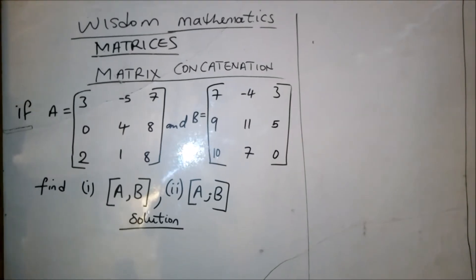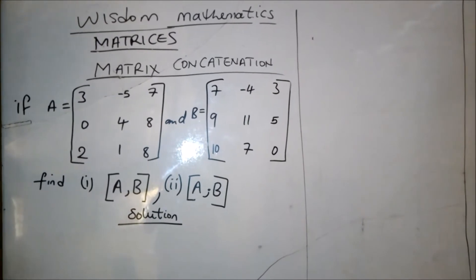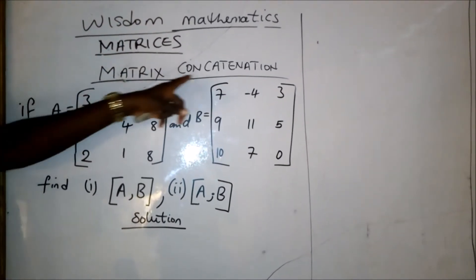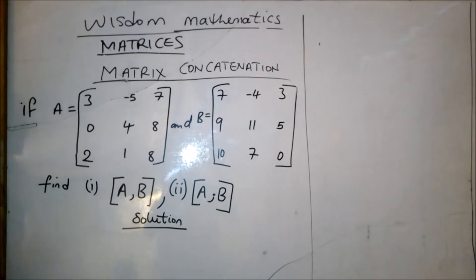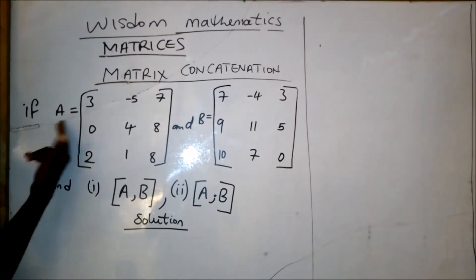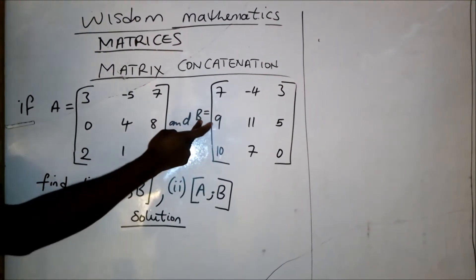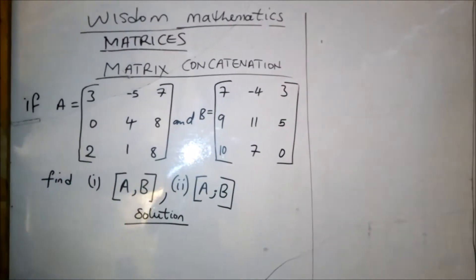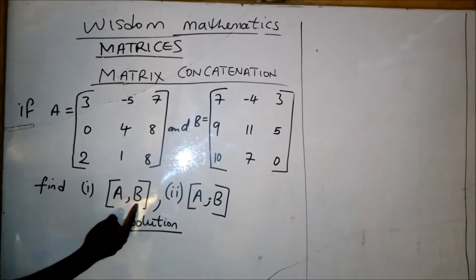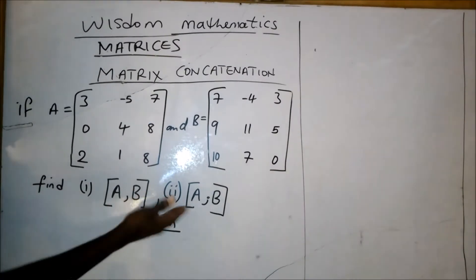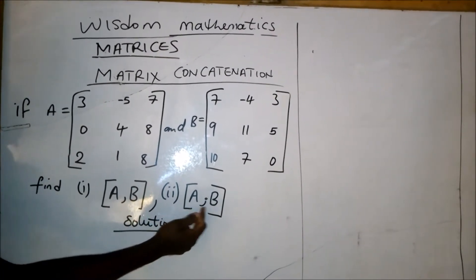Welcome to this episode of Wisdom Mathematics Tutorial on Matrices. We have matrix concatenation. The question we have here: if A is equal to this matrix and B is equal to this matrix, find A comma B, and in the second question, find A semicolon B.